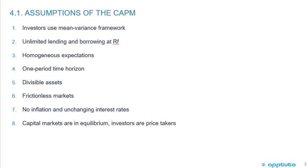Number two, unlimited lending and borrowing at the risk-free rate. Third assumption, homogeneous expectations. Fourth assumption, one-period time horizon. Fifth assumption, divisible assets. Sixth assumption, frictionless markets. Seventh assumption, no inflation and unchanging interest rates. And finally, the eighth assumption, capital markets are in equilibrium and investors are price-takers.